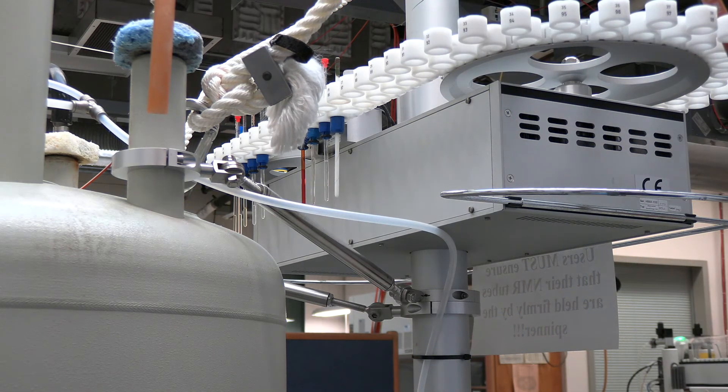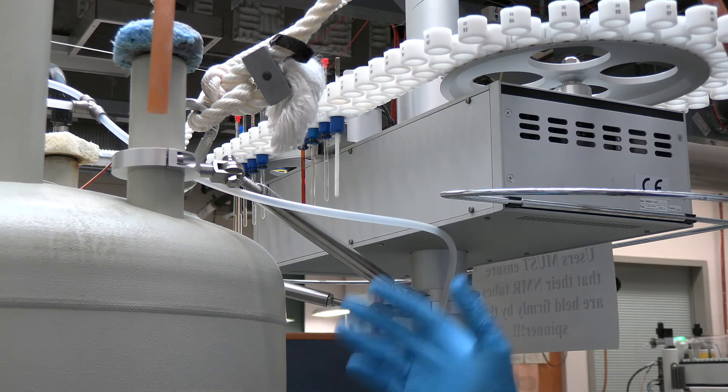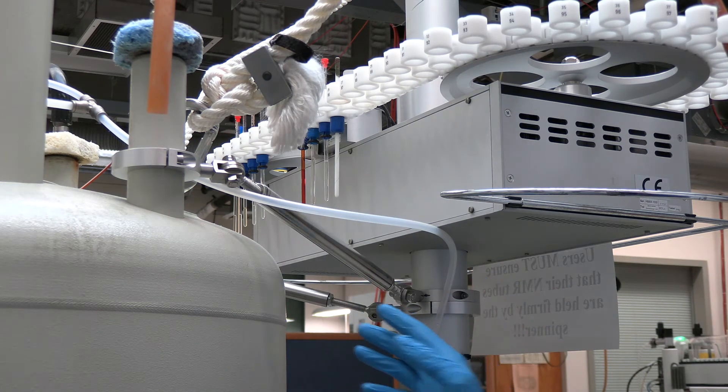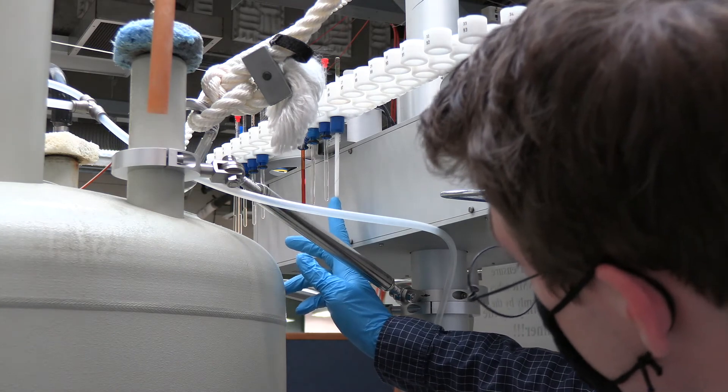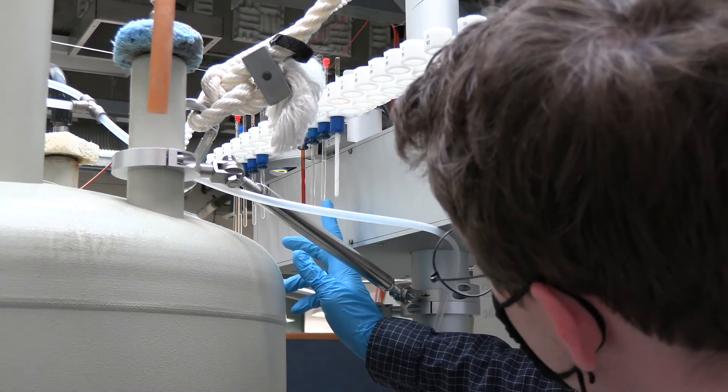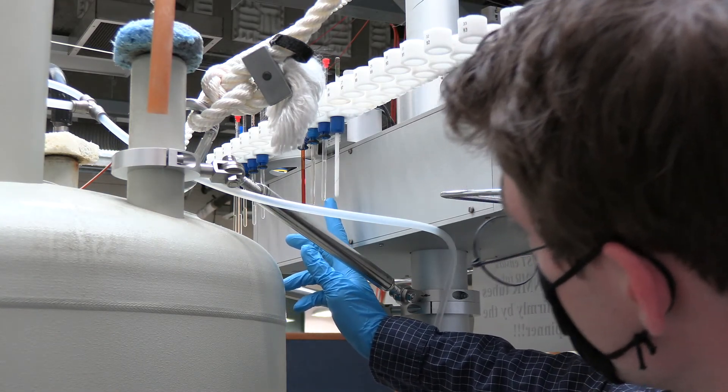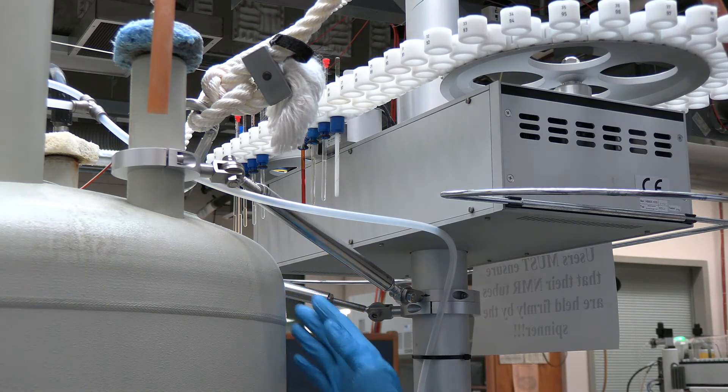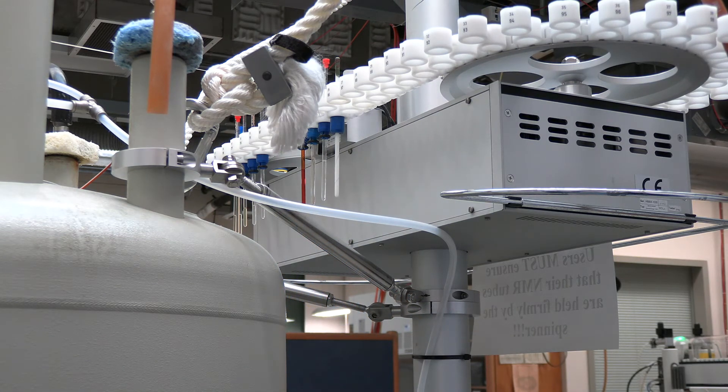Once you have placed your sample on the carousel you will want to make a mental note of what position it is in. As we can see here our sample is placed in position 24. This is important so that you can ensure that once you start adding experiments in the software you are doing so to the correct sample.